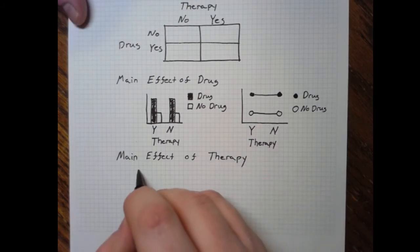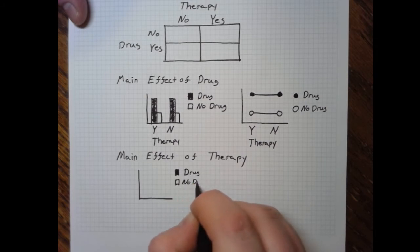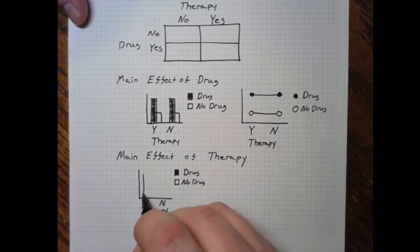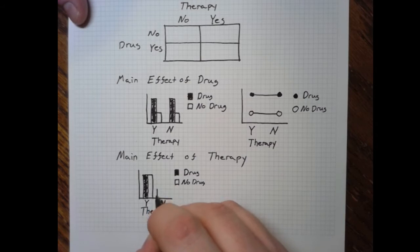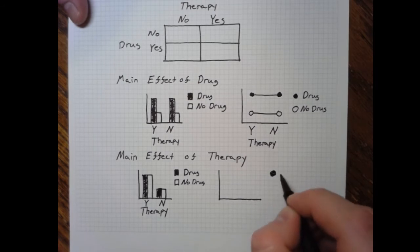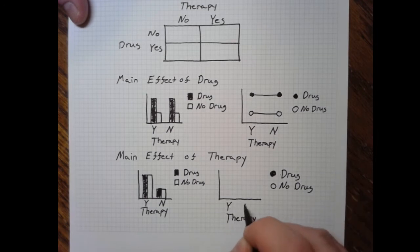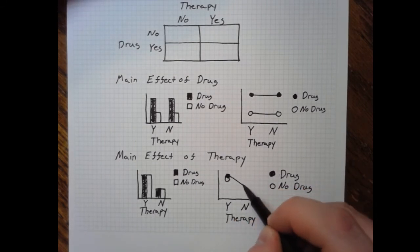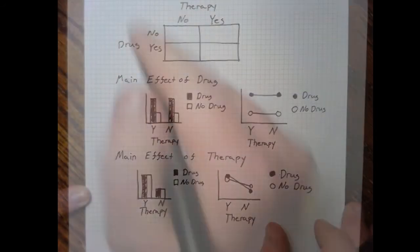When there's a main effect of therapy but not the drug, the therapy is causing an improvement but the drug is not. Keeping the same graph parameters, if you get the therapy, regardless of whether or not you get the drug, you do well. If you don't get the therapy, regardless of whether or not you get the drug, you do poorly. On a line graph, both lines slope together — it's really only the therapy that's driving the change.